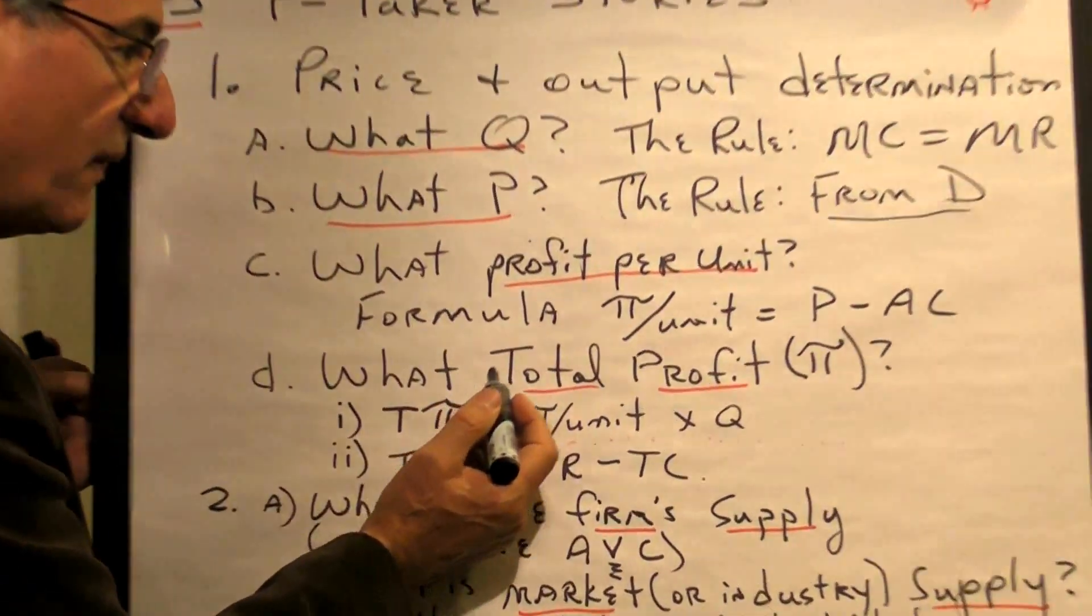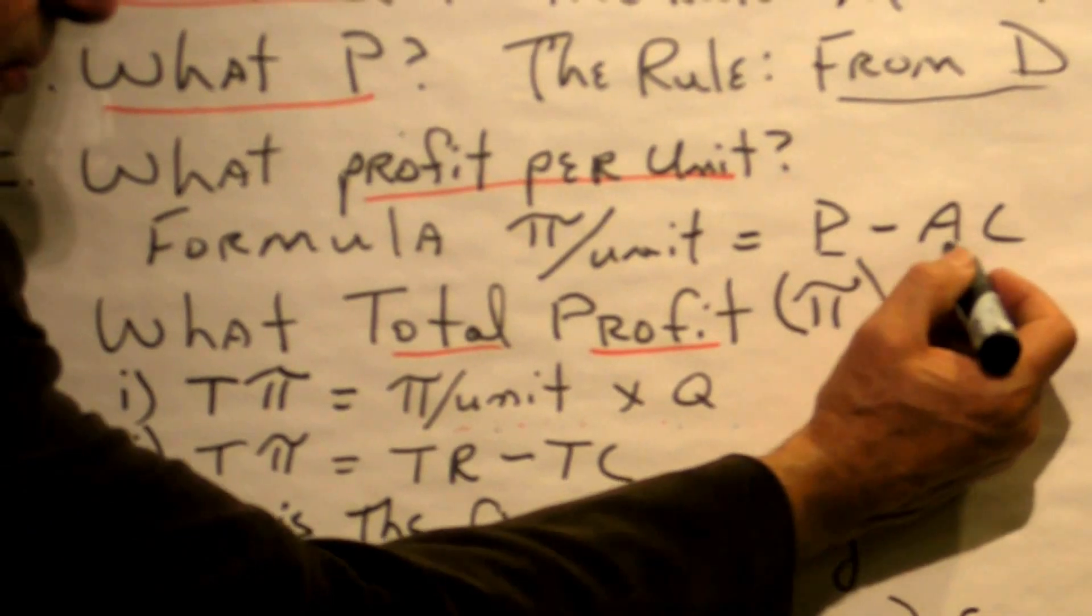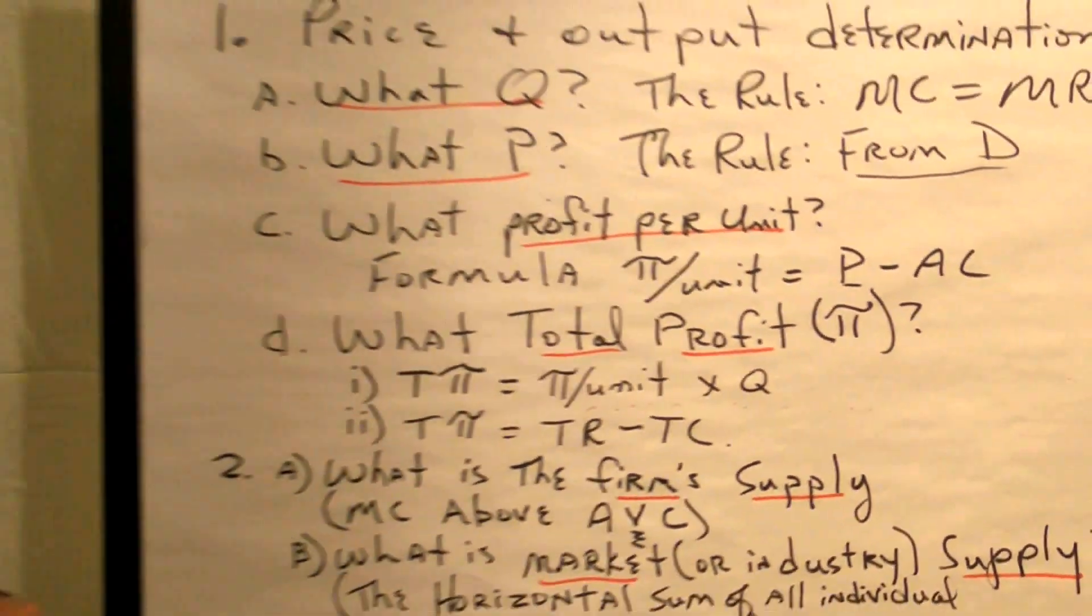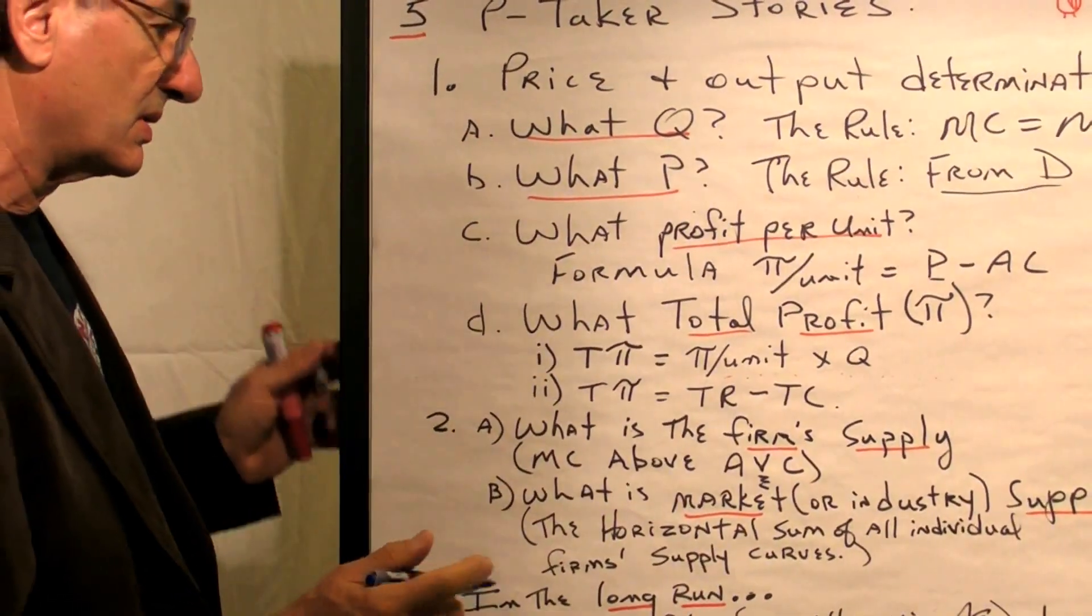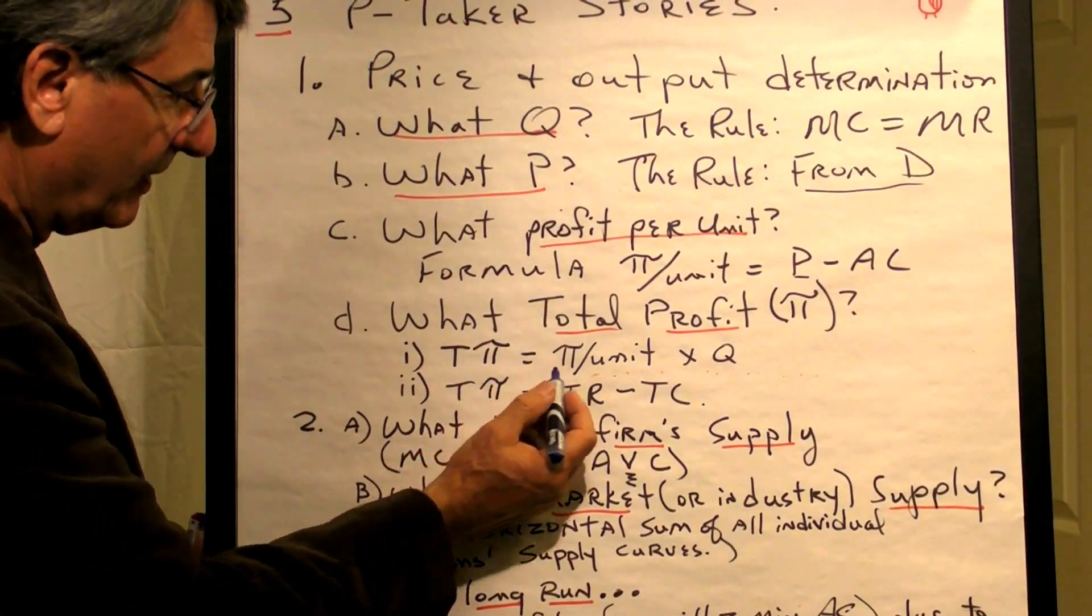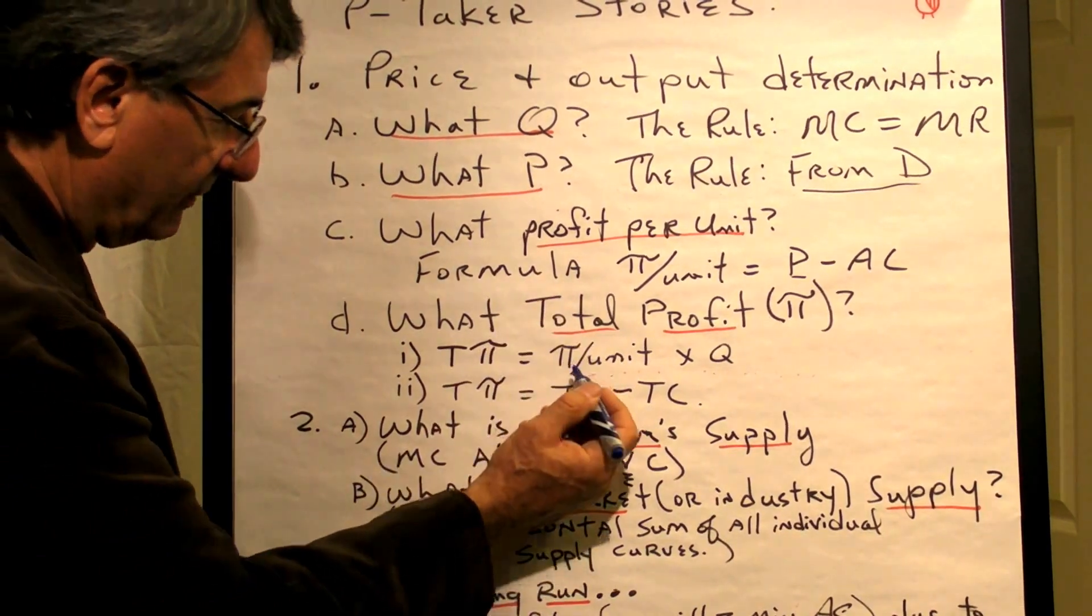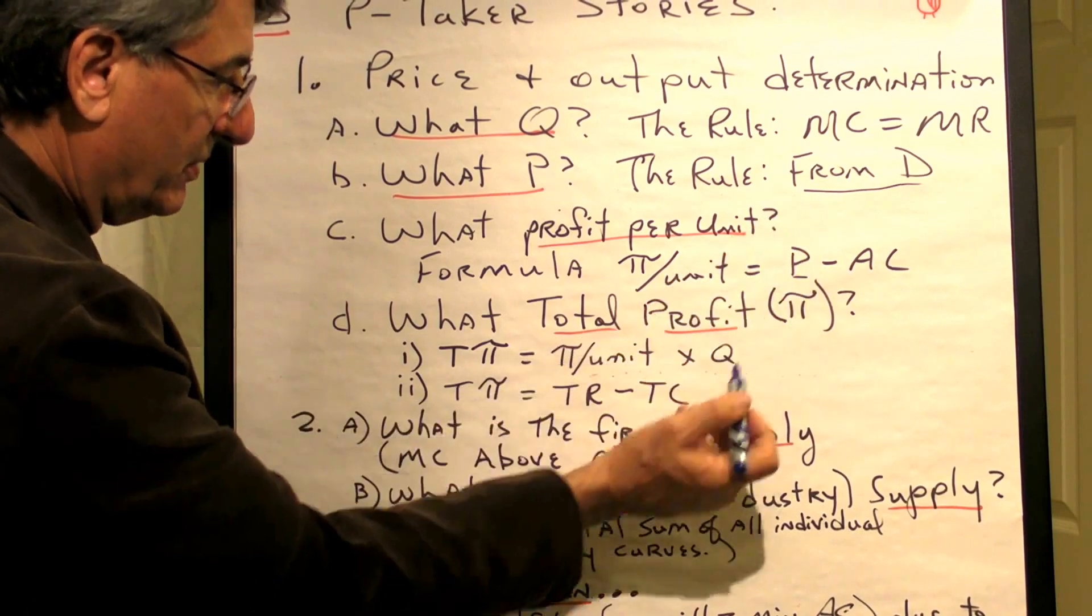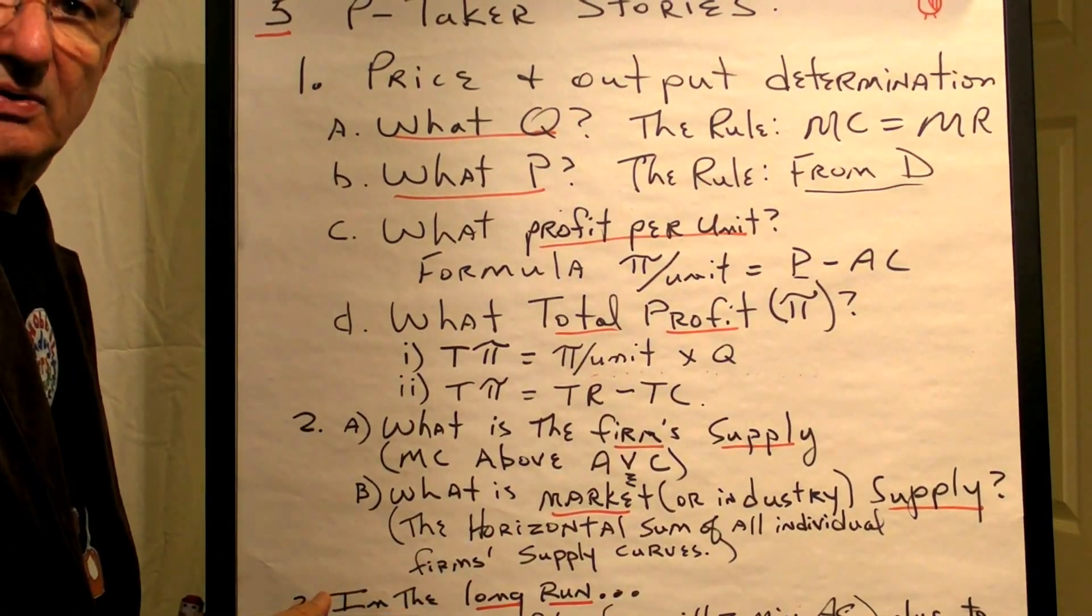What profit per unit? There's a formula for profit per unit. You take the price and subtract the average cost, and that's how much, on average, a firm will make on each unit produced and sold. What is total profit? You calculate total profit depending on what numbers you have. If you have the profit per unit and the quantity produced, you multiply them together, and that gives you total profit.